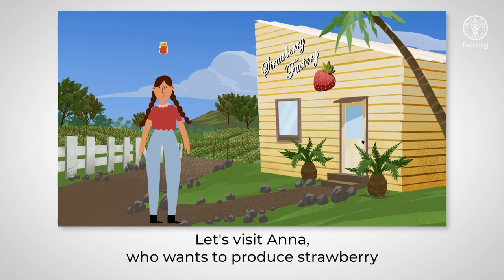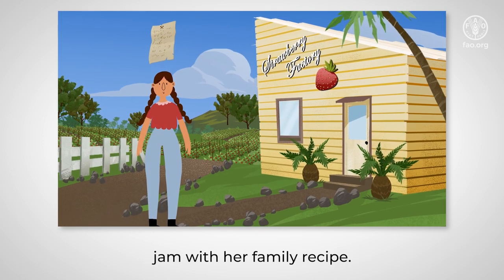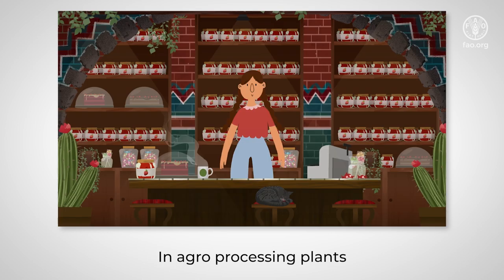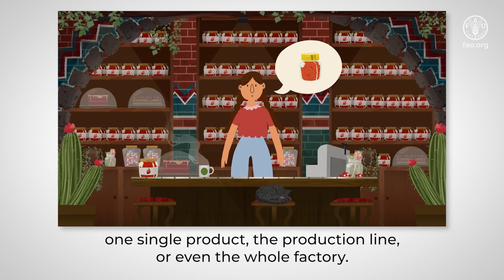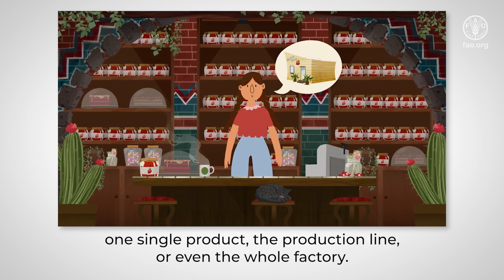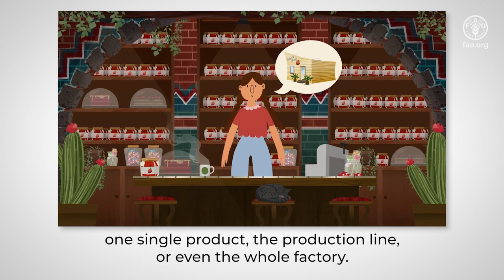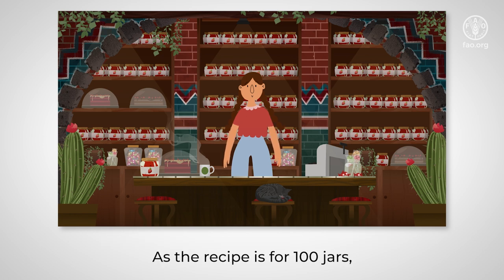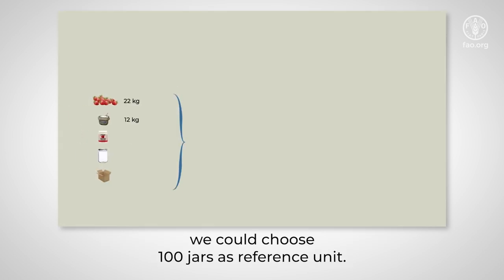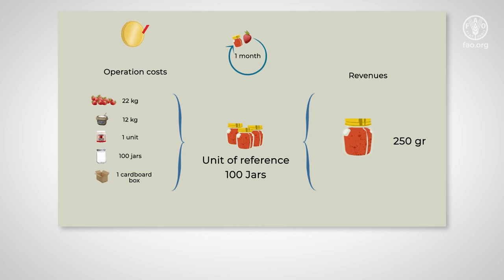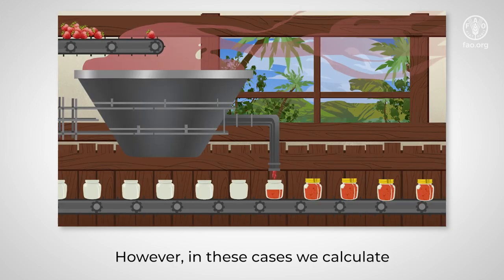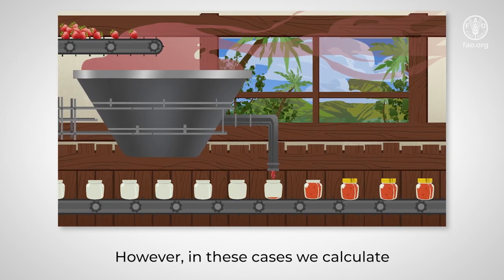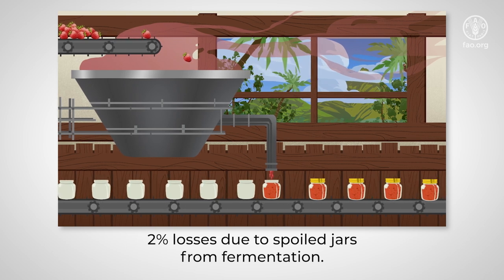Let's visit Anna, who wants to produce strawberry jam with her family recipe. In agro-processing plants, different reference units can be used — for example, one single product, the production line, or even the whole factory. As the recipe is for 100 jars, we could choose 100 jars as the reference unit. The unit of sale for this case is the jar of jam. However, in these cases, we calculate 2% losses due to spoiled jars from fermentation.